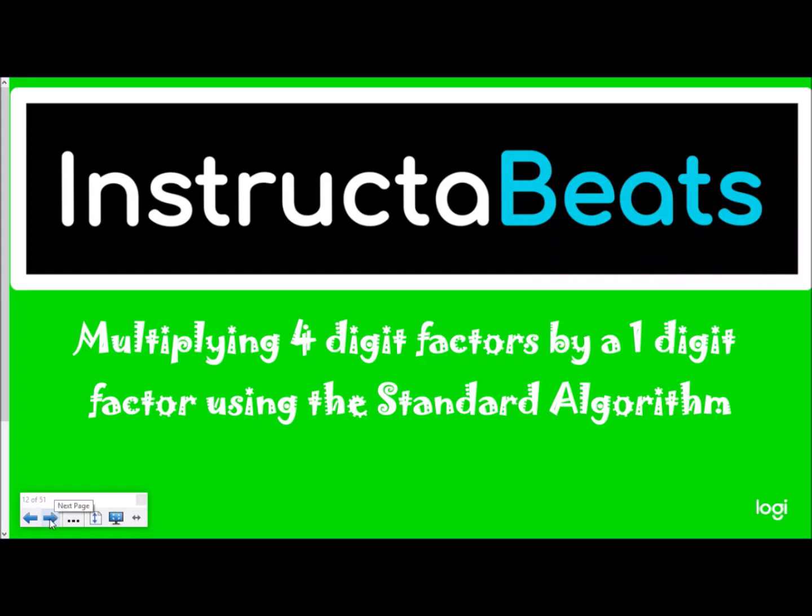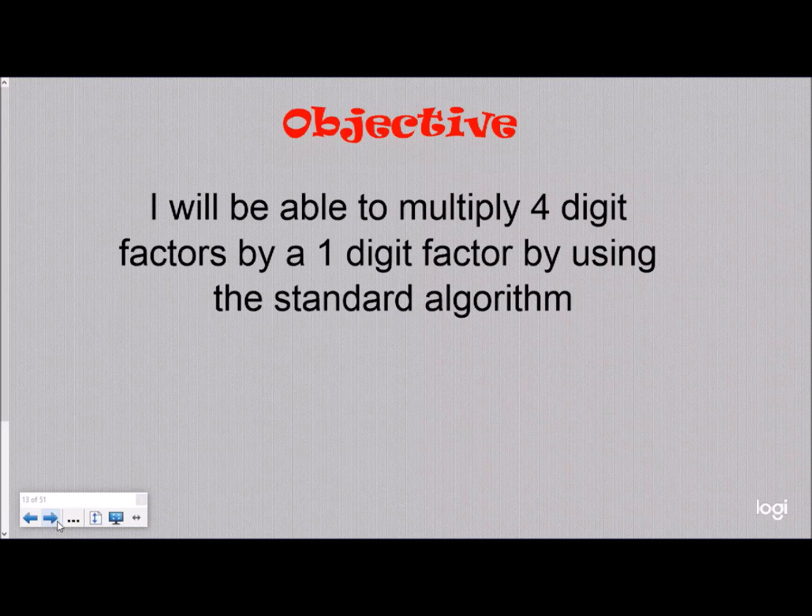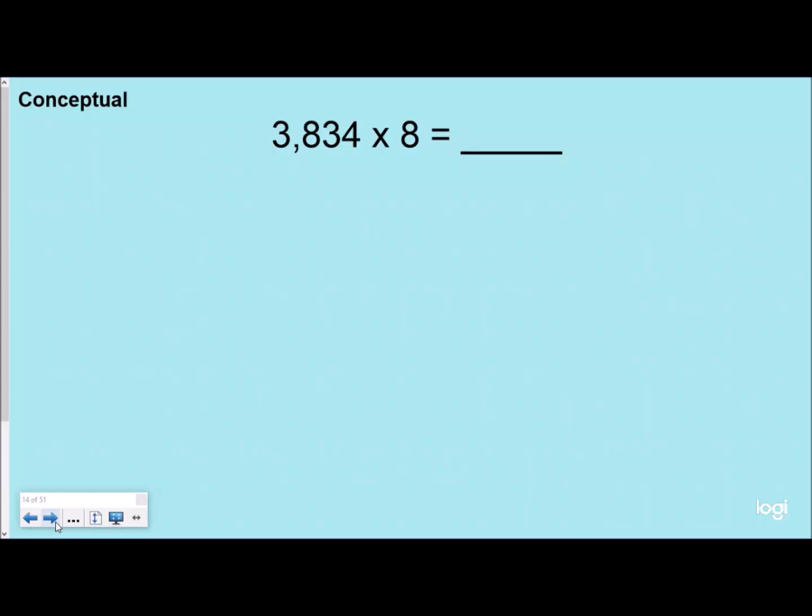So our objective today is I will be able to multiply four-digit factors by one-digit factors by using the standard algorithm. Conceptually, what we're doing when we multiply, I'm going to write this out using expanded form. I always like to start conceptually so we can understand what we're doing.